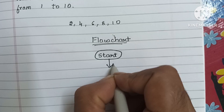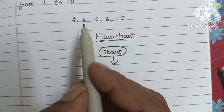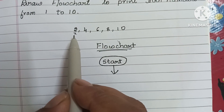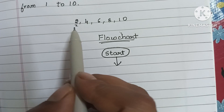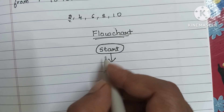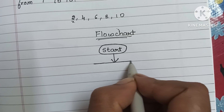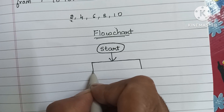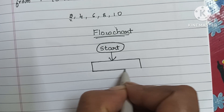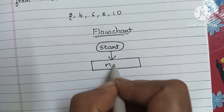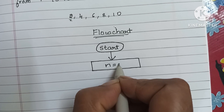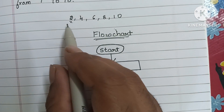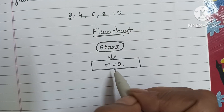Next, we know that the smallest even number is 2. So the next step is to declare the value of n. We declare n is equal to 2. The smallest even number is 2, so we have to declare n is equal to 2.